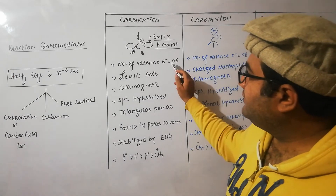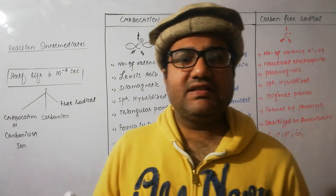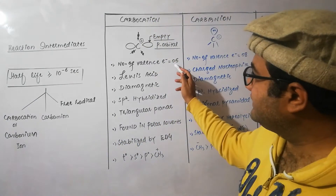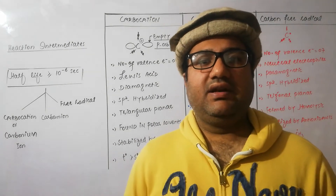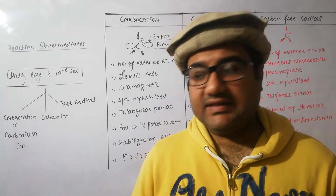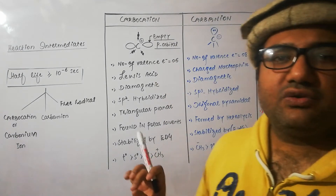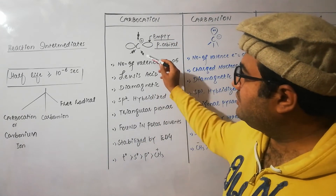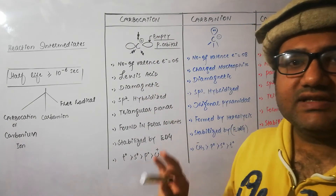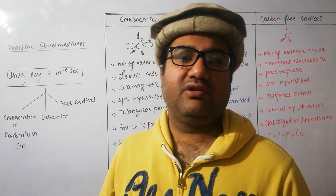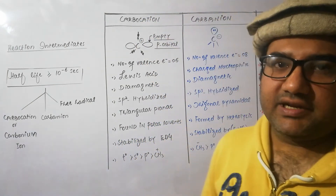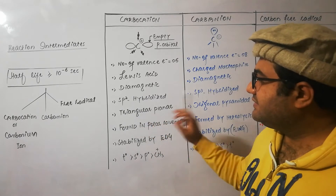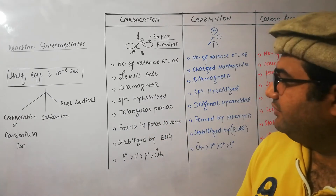The number of valence electrons is six. As this carbon is suffering from a shortage of octet — valence electrons should be eight but are six — it is electron deficient and will act as an electrophile. It is diamagnetic because all six electrons are paired; due to the absence of an unpaired electron, this carbon behaves as diamagnetic. This carbon is sp2 hybridized, and as it is sp2 hybridized, its geometry is trigonal planar.